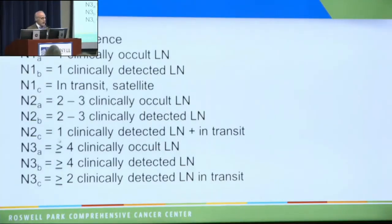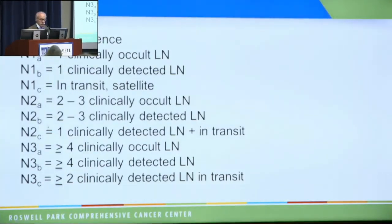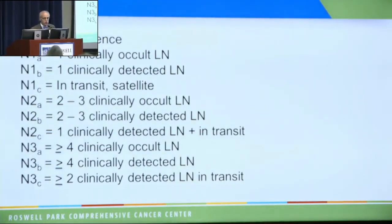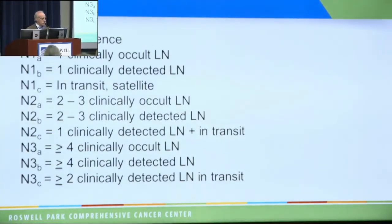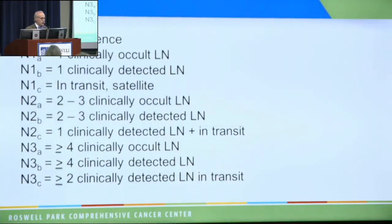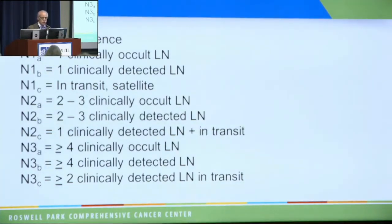The lymph nodes are the N stage — N standing for lymph node. No evidence of cancer in the lymph node is N0, and then staging is based on the number of lymph nodes involved and whether they're clinically palpable or seen on a scan, or whether they're microscopic. On your path report, you might see a C for clinical — meaning not pathologically staged — or a P, meaning a lymph node was removed and examined under the microscope. Currently, the amount of melanoma in your lymph node is controversial. We're trying to define whether there's a subset of patients with lymph node involvement who behave very indolently — that's an ongoing area of research.